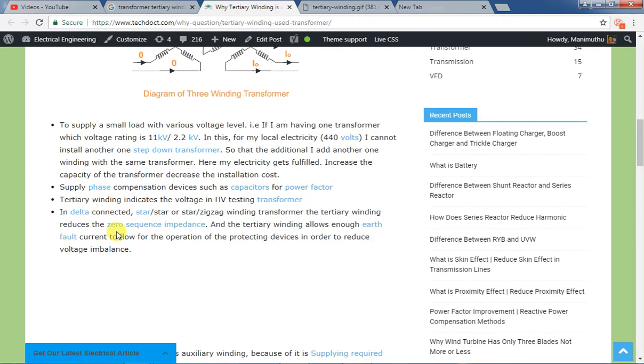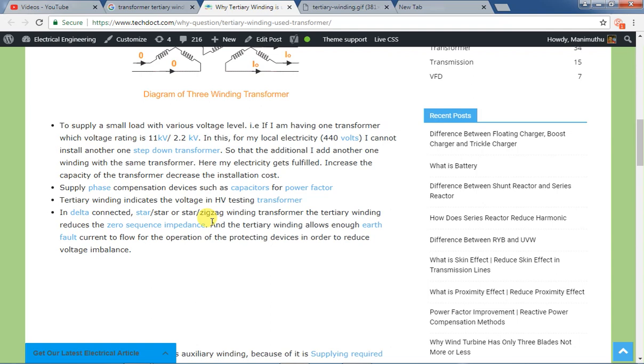So for this purpose, if you have all the data, you will have a link to the description. You will see that. For this purpose, we will use the tertiary winding. Okay, so if you have the output down here, let us give it a description.